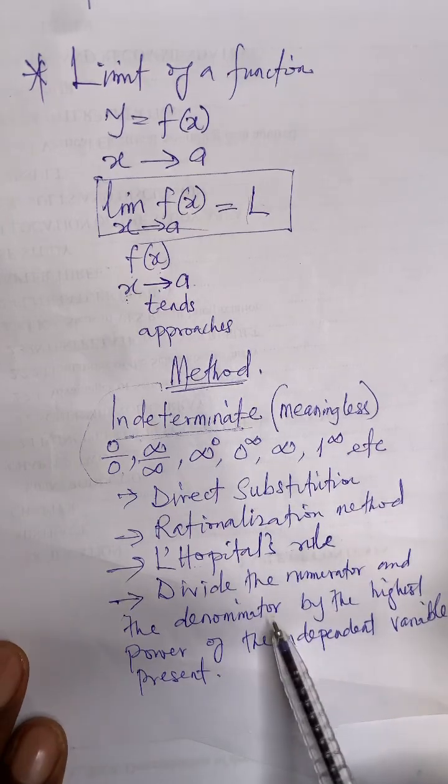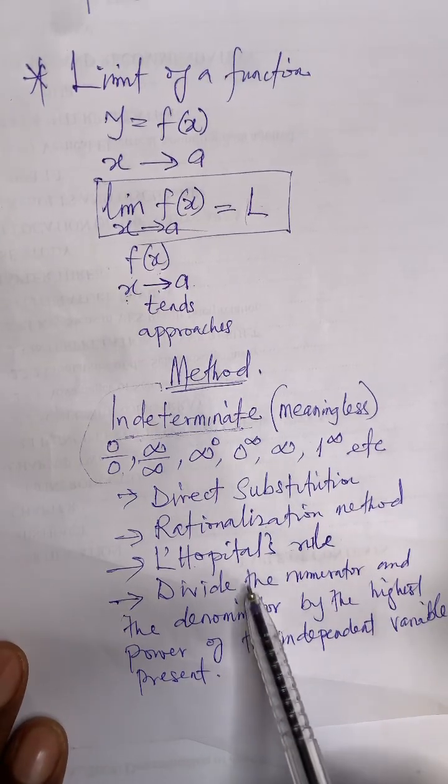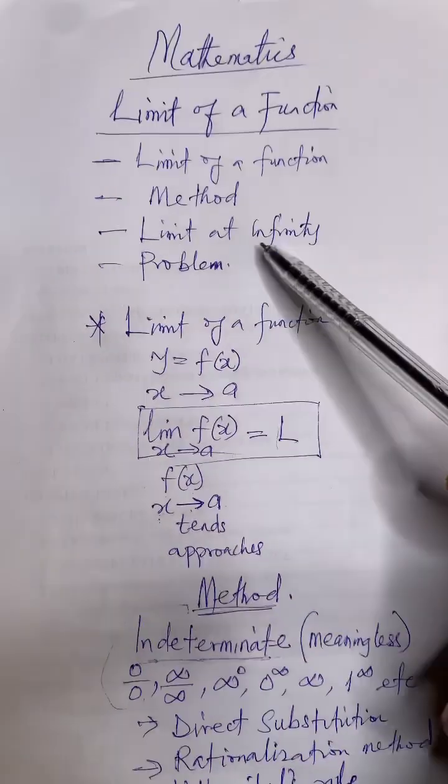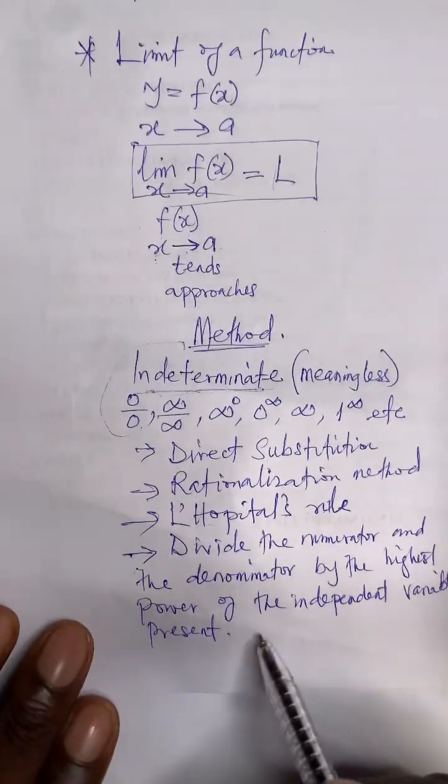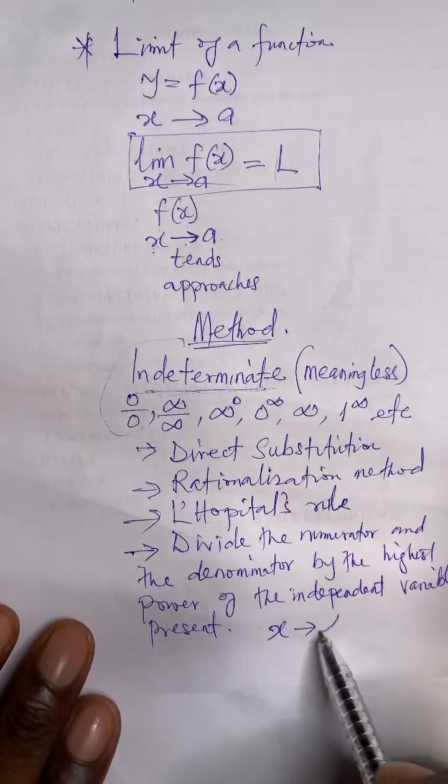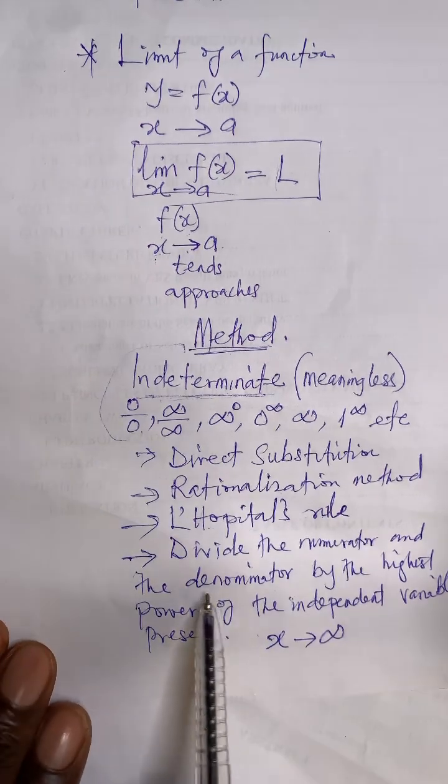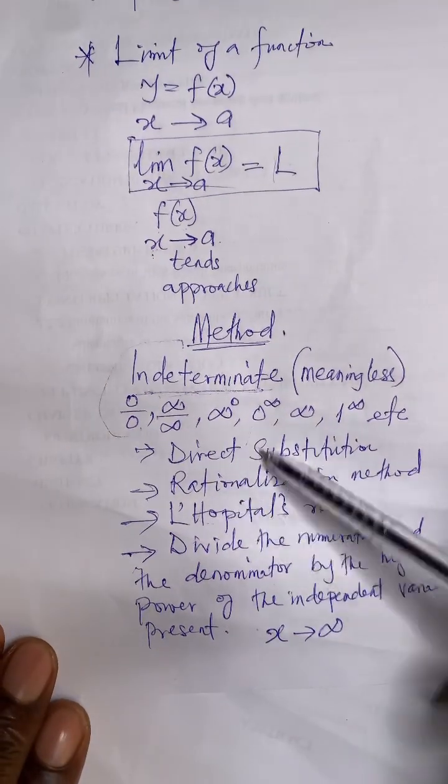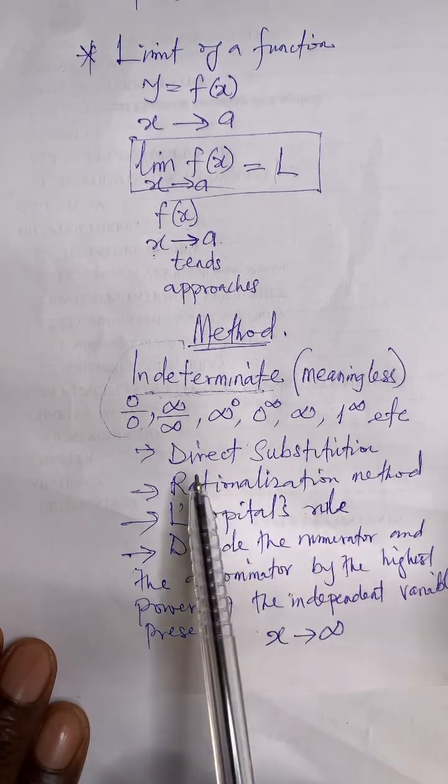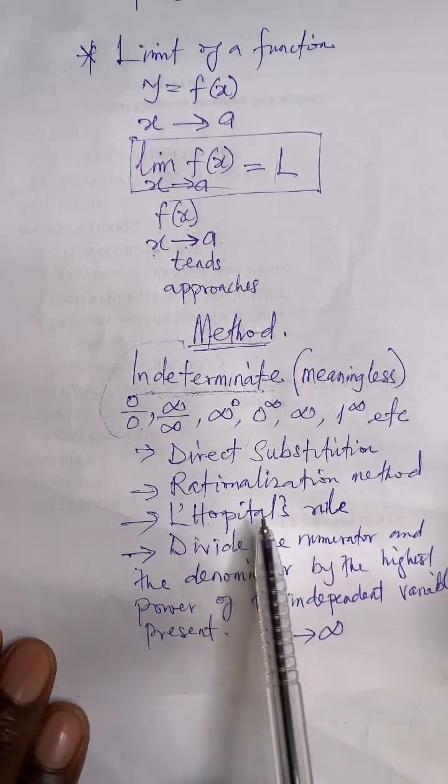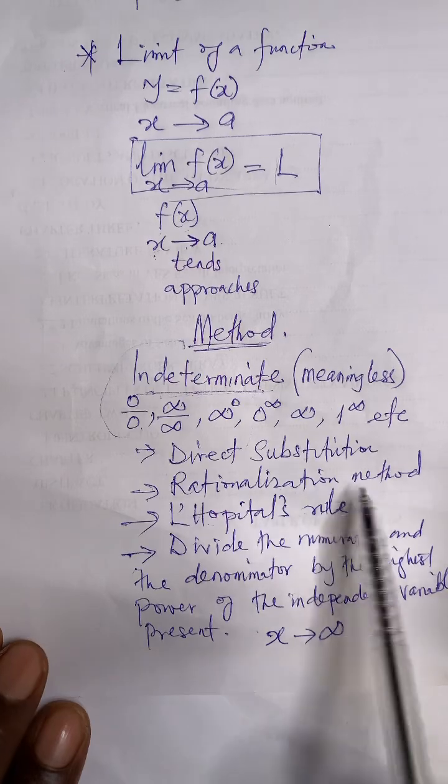Okay, so when you apply this particular method, I call this one the limit at infinity. When they say x extends to infinity, when you see something like x approaches infinity like this, this last method you will use. If you try any of these methods, direct substitution, when you do that substitution, the next thing is simplification or factorization.